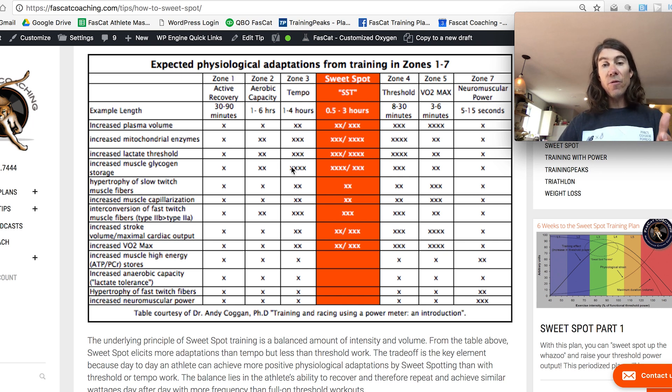But as you move over to the right, you'll notice there's more X's. There's more physiological adaptations. You go harder, you force a greater physiological adaptation. And so what you see here, the sweet spot is highlighted because that's what we're talking about, but there are way more X's, way more physiological adaptations that occur in the sweet spot compared to zone two alone.